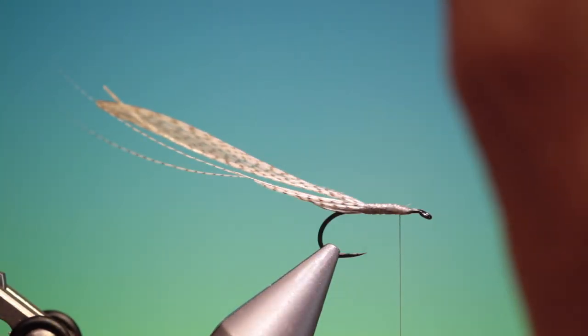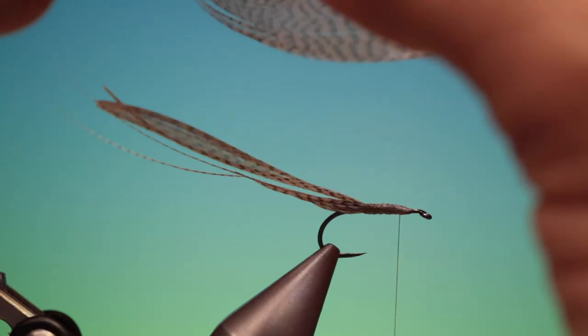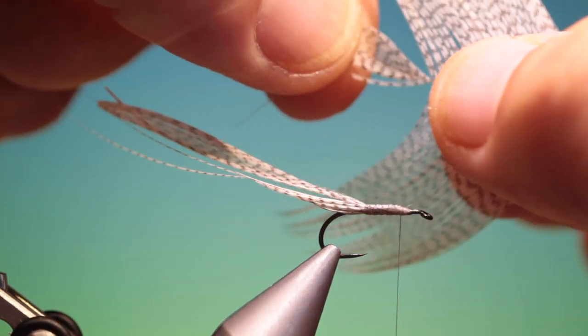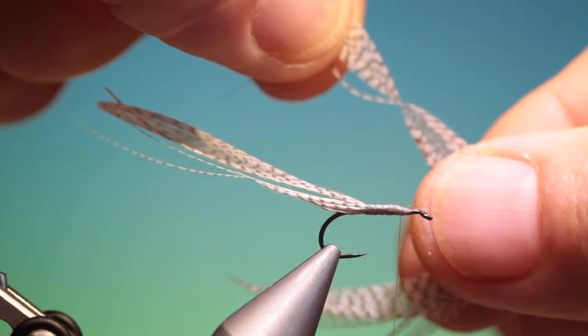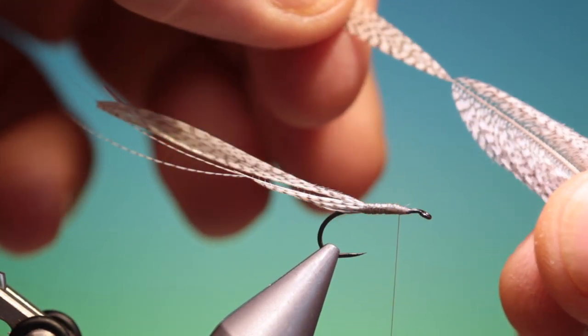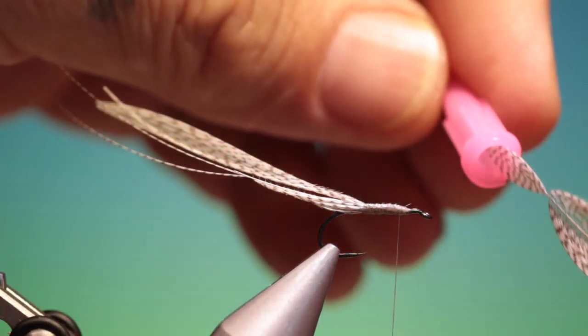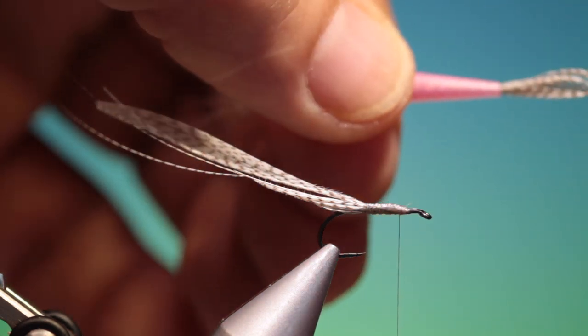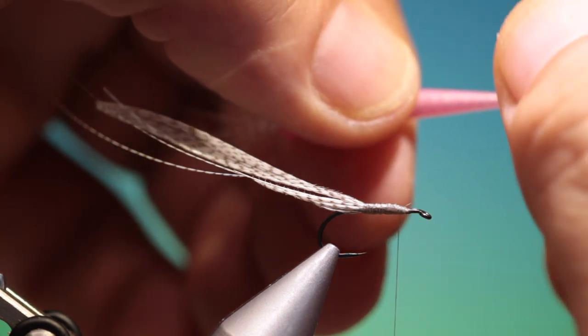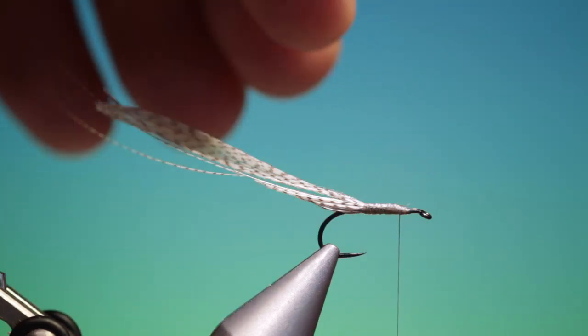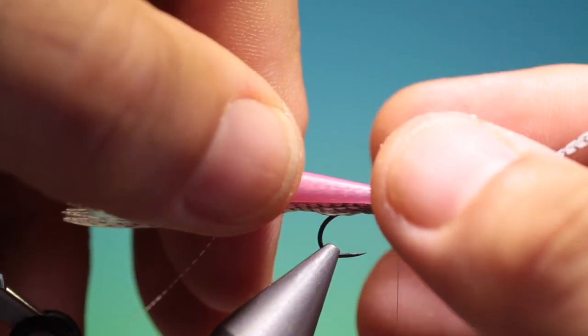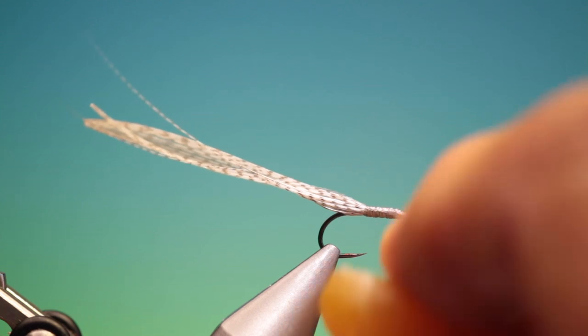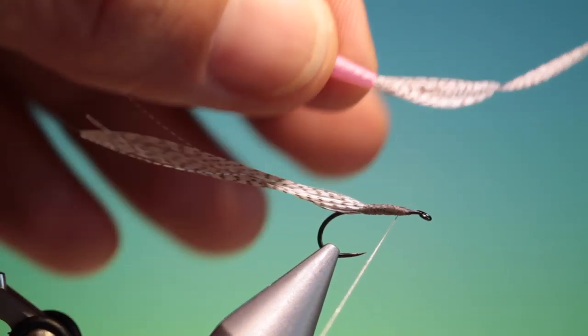We need another mallard flank for the wings. Again, separate the fibres and brush them carefully back, in the tube again, and pull it through until you get the wings the right size you want. Add a little bit of wax - this helps give extra purchase on the wings.